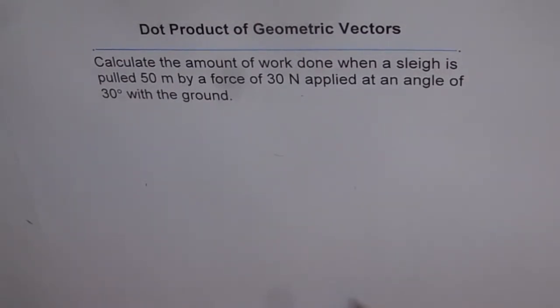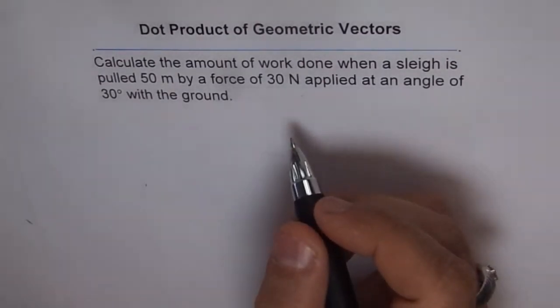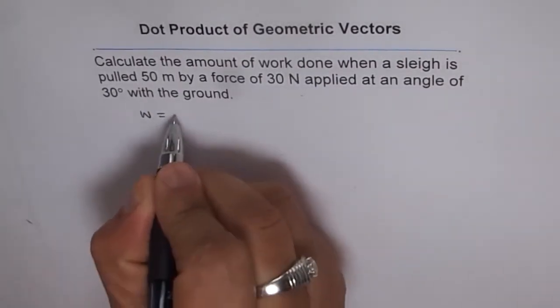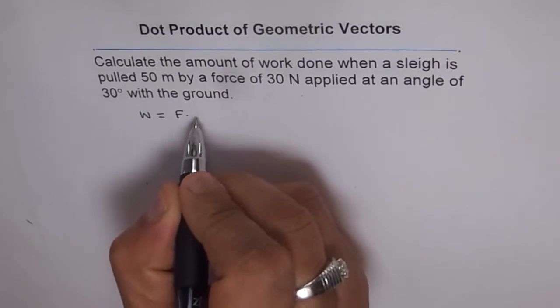Work done is the dot product of force and distance. So work done W equals F dot D.